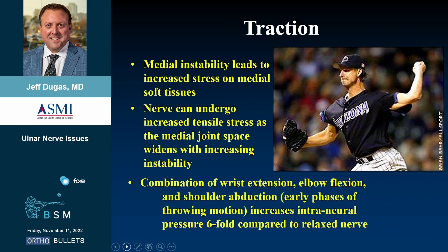Medial instability leads to increased stress. The ulnar nerve can undergo increased tensile stress as the medial joint space widens. If the medial joint space gets up to five or six millimeters, consider how much stress the nerve is absorbing. The combination of wrist extension, elbow flexion, and shoulder abduction — the early phases of throwing — increases intranural pressure six-fold compared to the relaxed nerve.